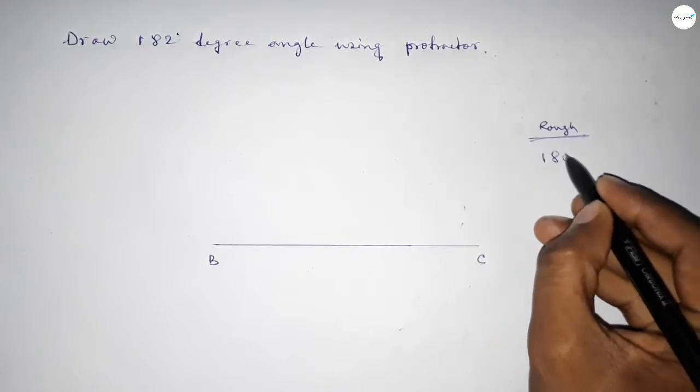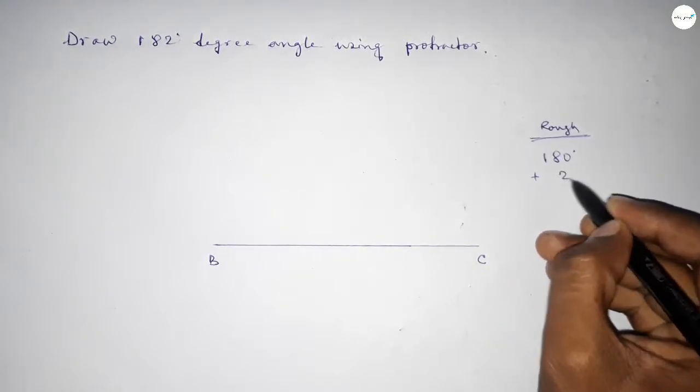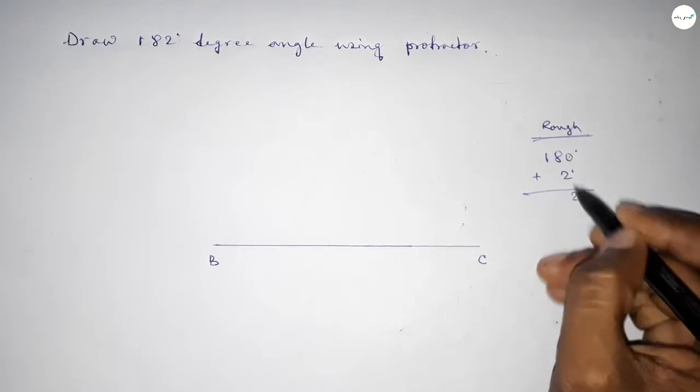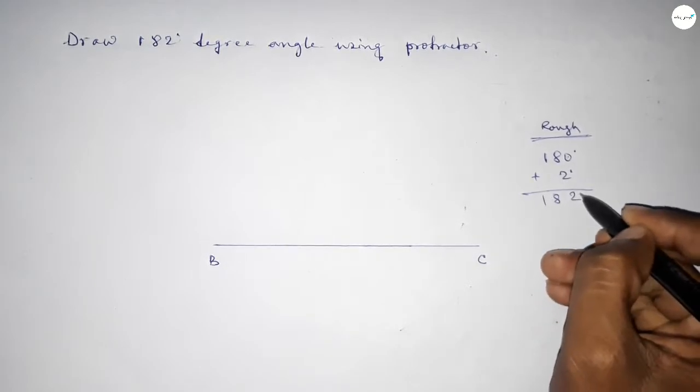If we add a 2 degree angle to 180 degrees, we can get a 182 degree angle. So first, we count 180 degrees.